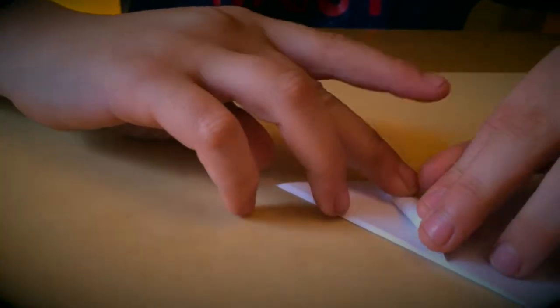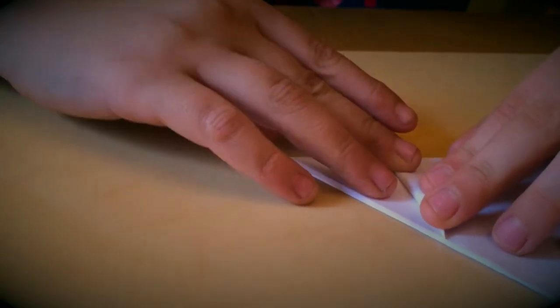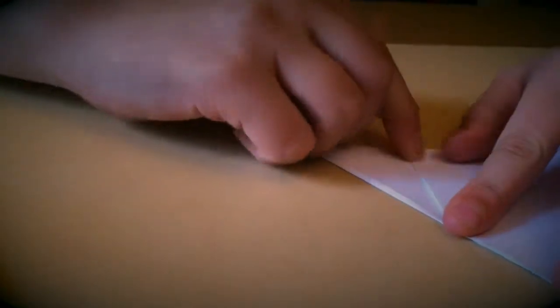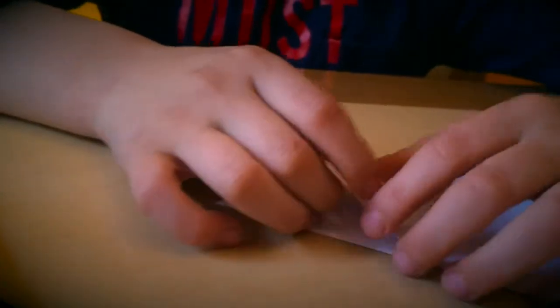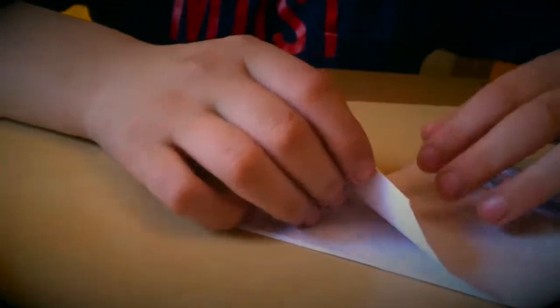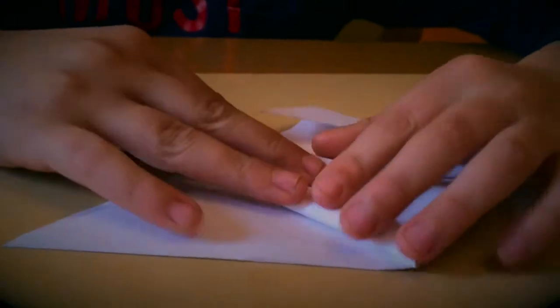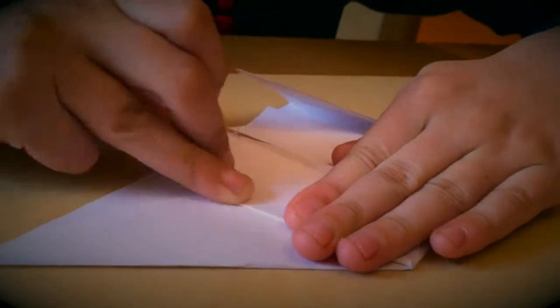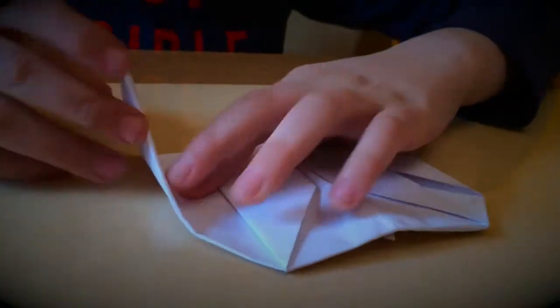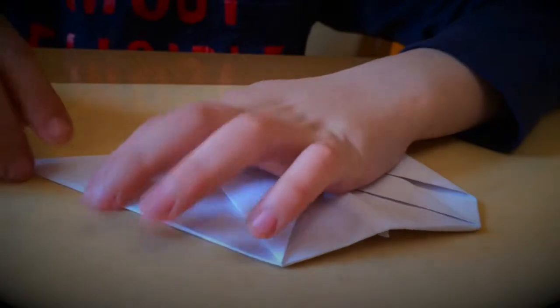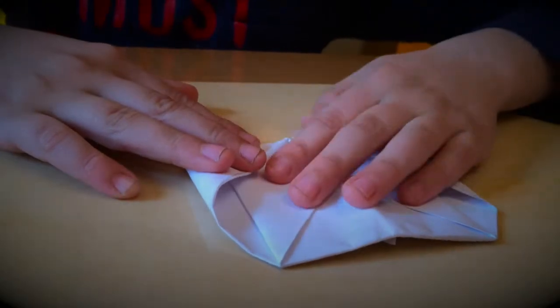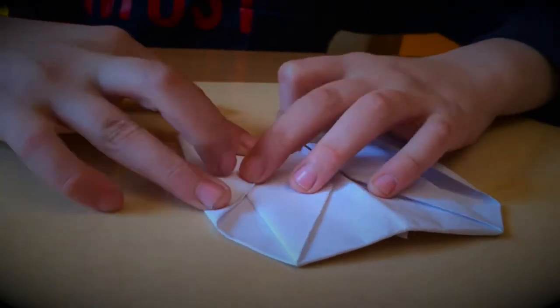Now we are going to fold the side all the way over to where the line that I just marked is. Then move this over here, like we did just a few seconds ago, and also push. Now we are going to take the lower level and even it with the middle crease and push.